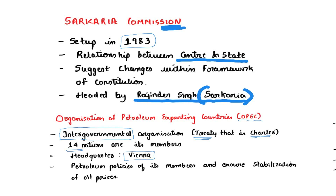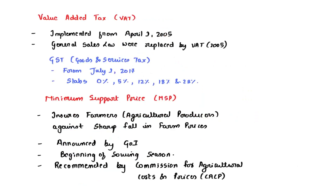OPEC coordinates petroleum policies of its member countries and ensures stabilization of oil prices for its 14 member nations. Next is Value-Added Tax, or VAT, which was implemented from April 1st, 2005.